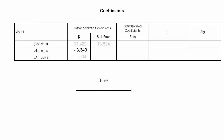The standard error for absences is 0.773. I am 95% confident that the beta for absences is between negative 5.2 and negative 1.5. For the SAT score, the standard error is 0.021, and I am 95% confident that the beta for SAT scores is between 0.046 and 0.143.